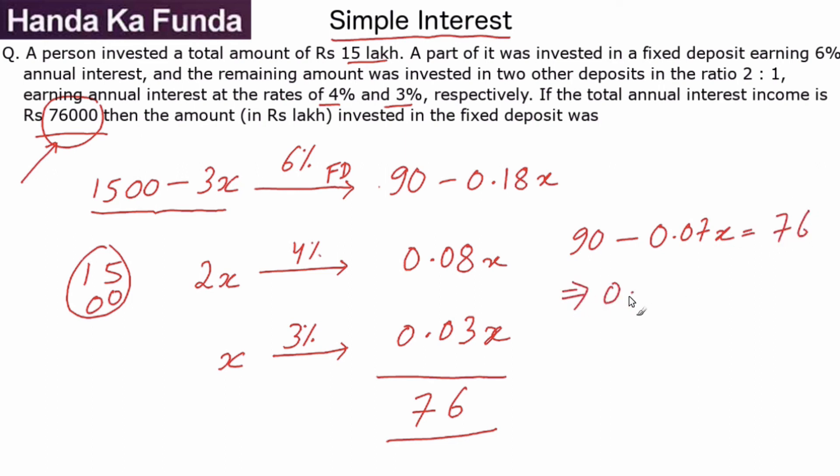If it goes to the other side, it's 90 minus 76 or 14. I get the value of x as 14 by 0.07. Now 14 by 7 would have been 2.